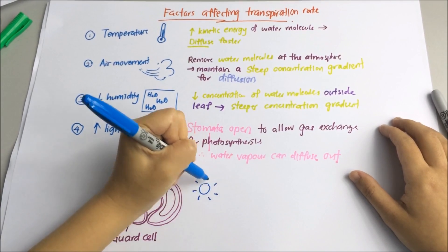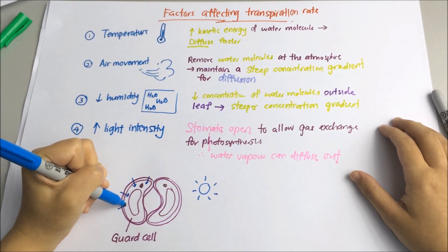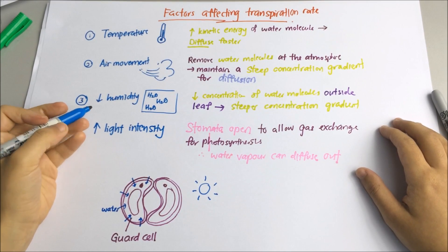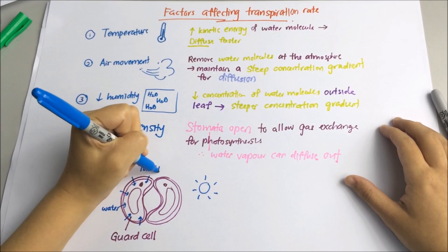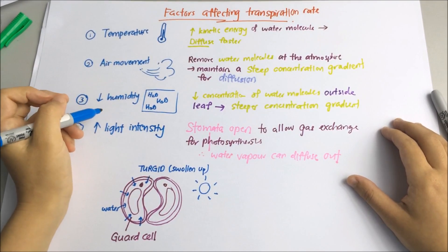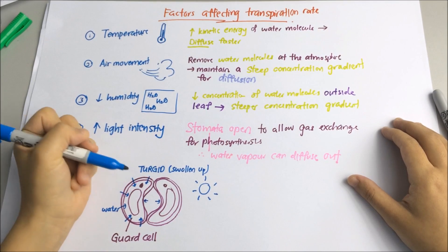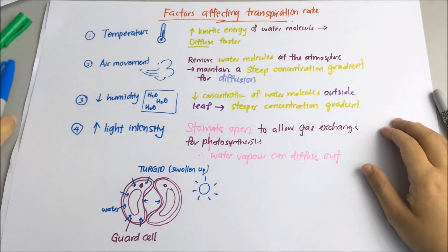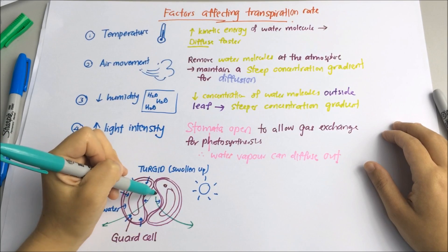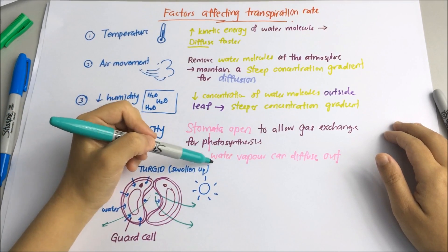During the day, light will stimulate photosynthesis in guard cells. The guard cells will start taking up water by osmosis and become swollen — the term we use is turgid, which means swollen. Because their inner walls are rigid, they are pulled apart and this will open the pore, allowing gaseous exchange and evaporation of water from inside the leaf to outside the leaf.